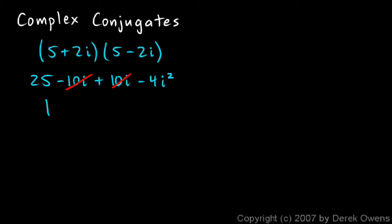So I have my 25, and then I have minus 4 times negative 1. That's the same as 25 plus 4, which is just 29. So that's my answer. I multiplied these two complex numbers together, and I got 29 for an answer. My answer is not a complex number, it's a real number.